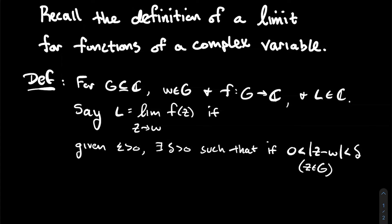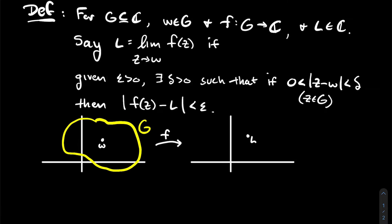That says Z and W are at most distance delta from each other, and the zero on the left side means I'm not allowing Z to actually equal W — I only care about points very close to W, not actually equal to W. If Z is sufficiently close to W, then F(Z) is really close to L. Let me give you a schematic of what this definition is trying to capture.